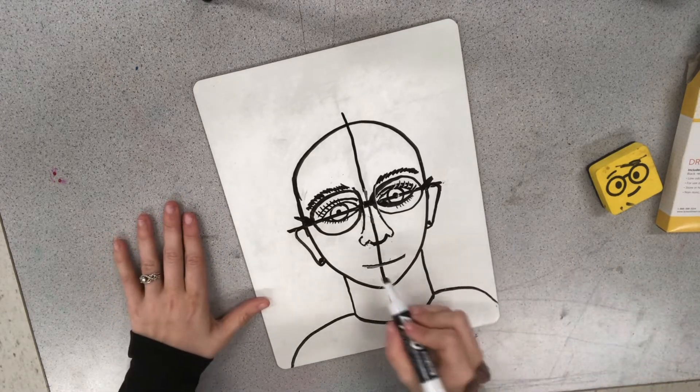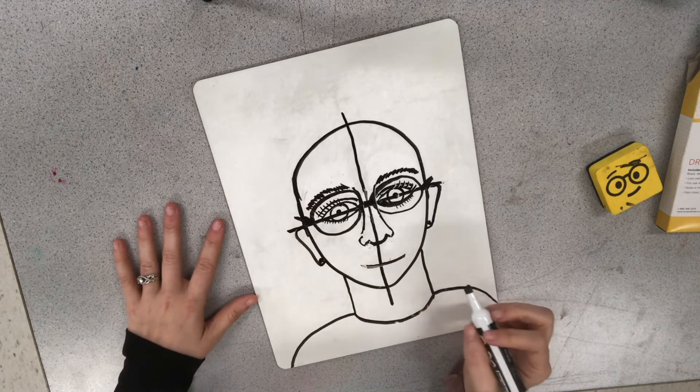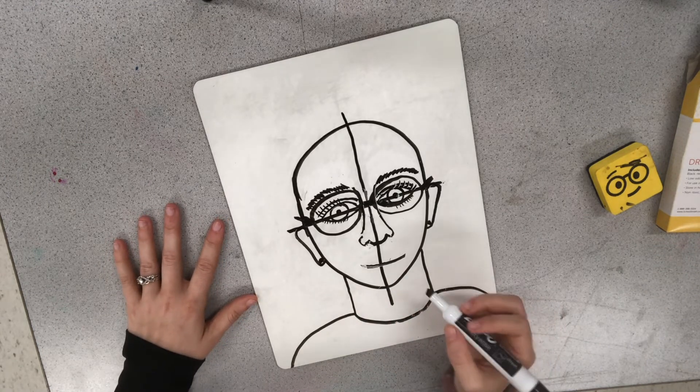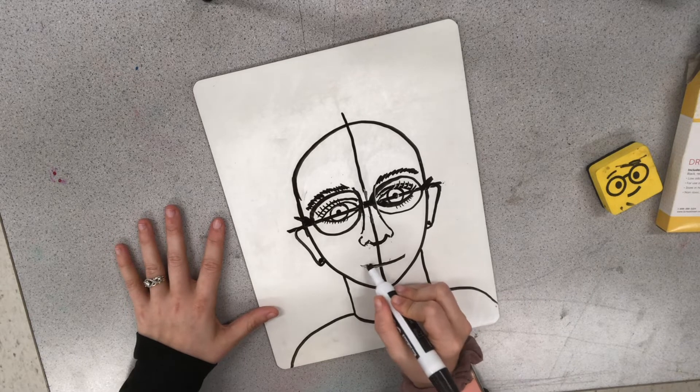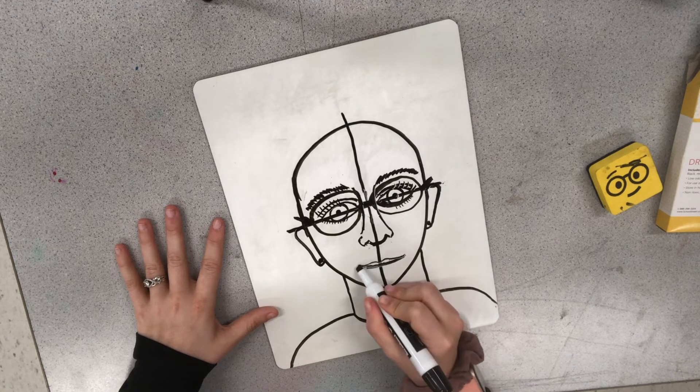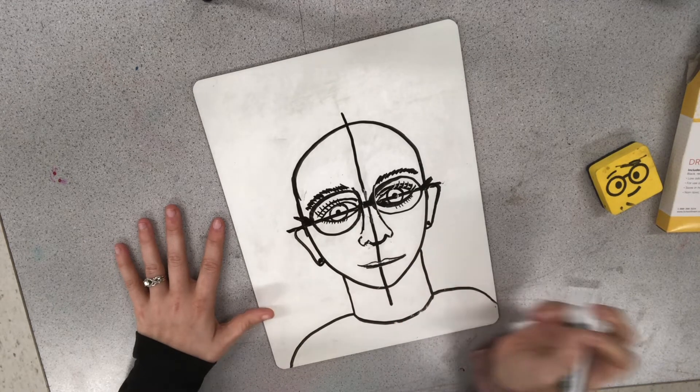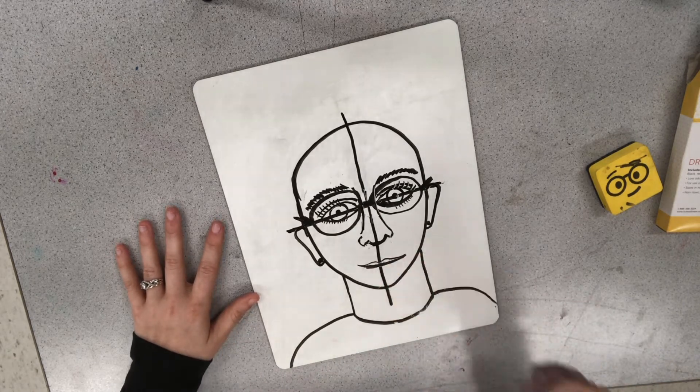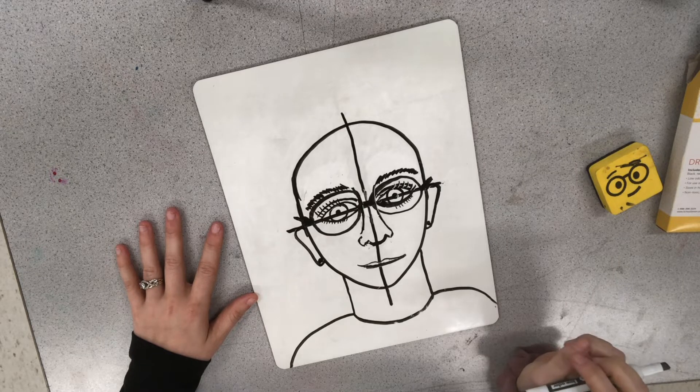And then we're going to make the top lip. So the top lip is kind of like a stretched out letter M or like two mountains, whichever way you want to think about it. So it kind of looks like this. It's got the two lumps on the top. And everybody has this.